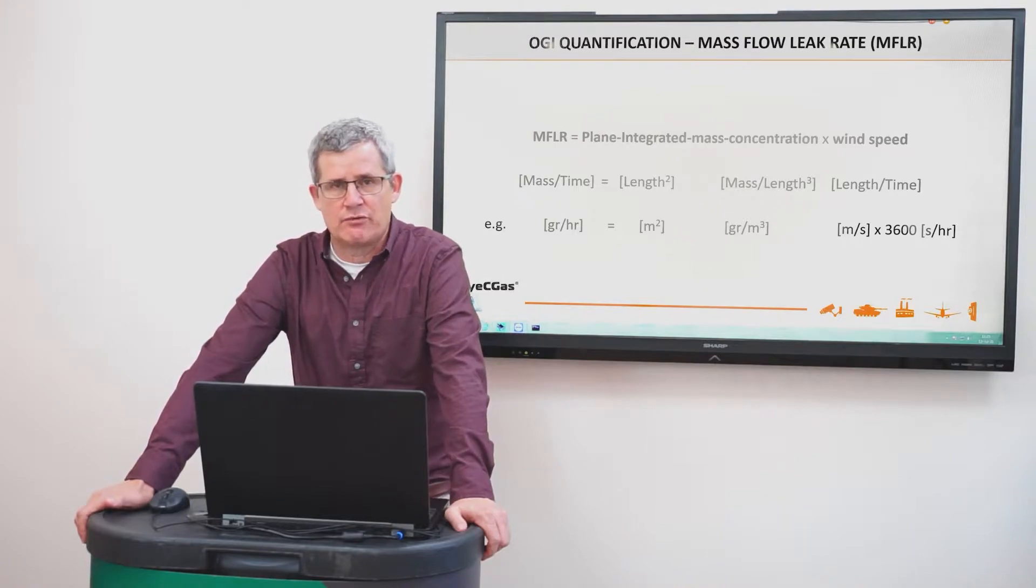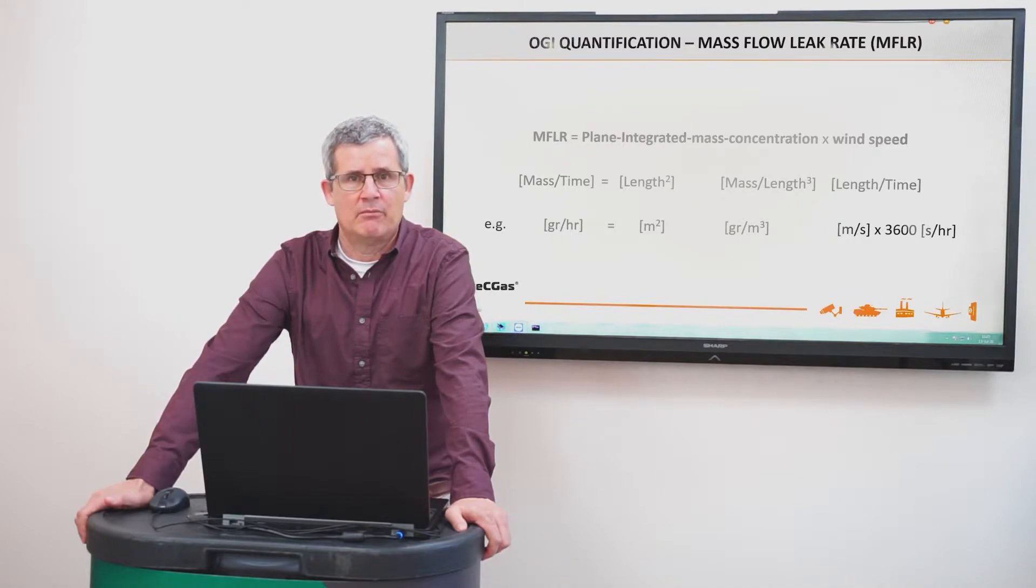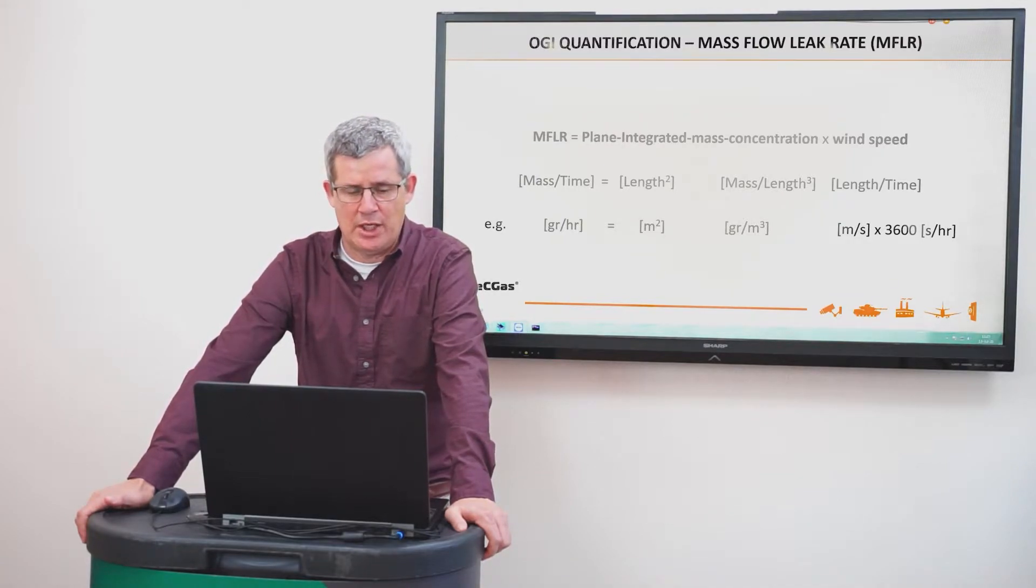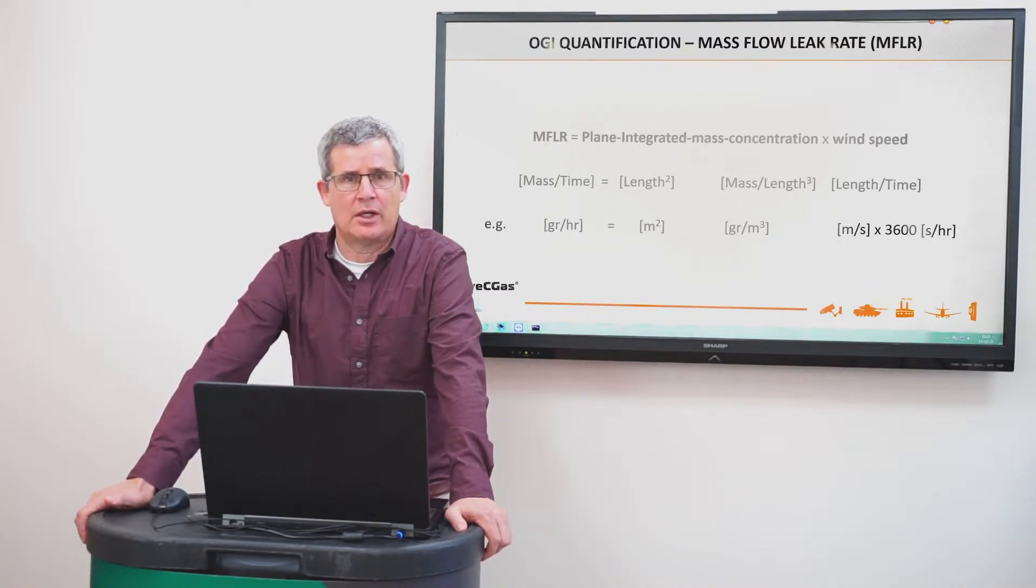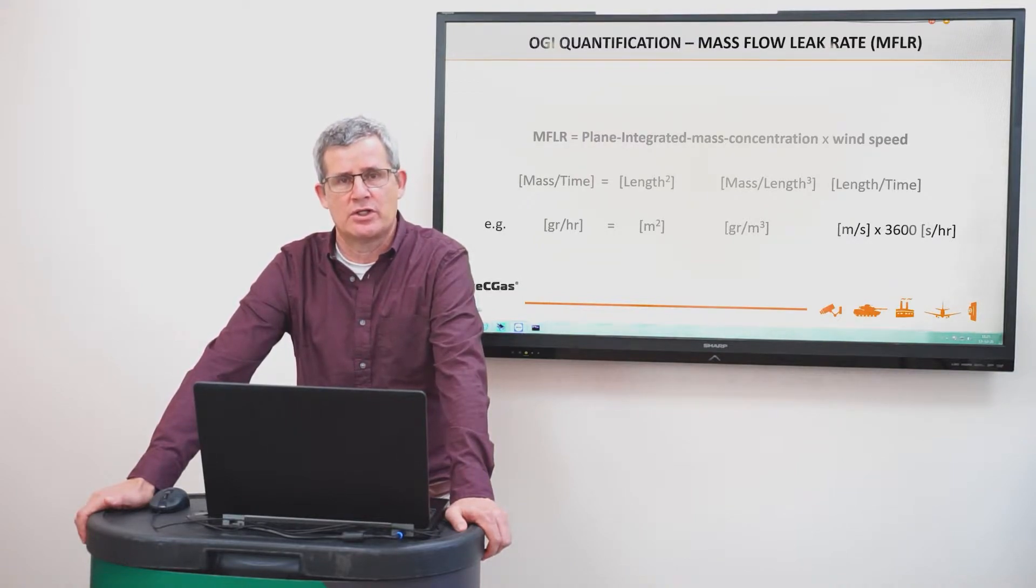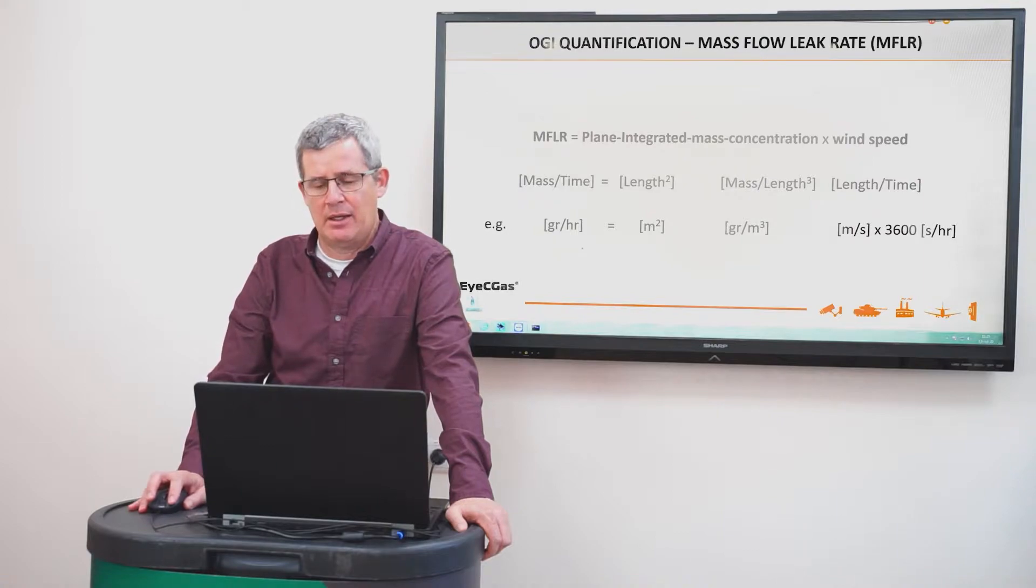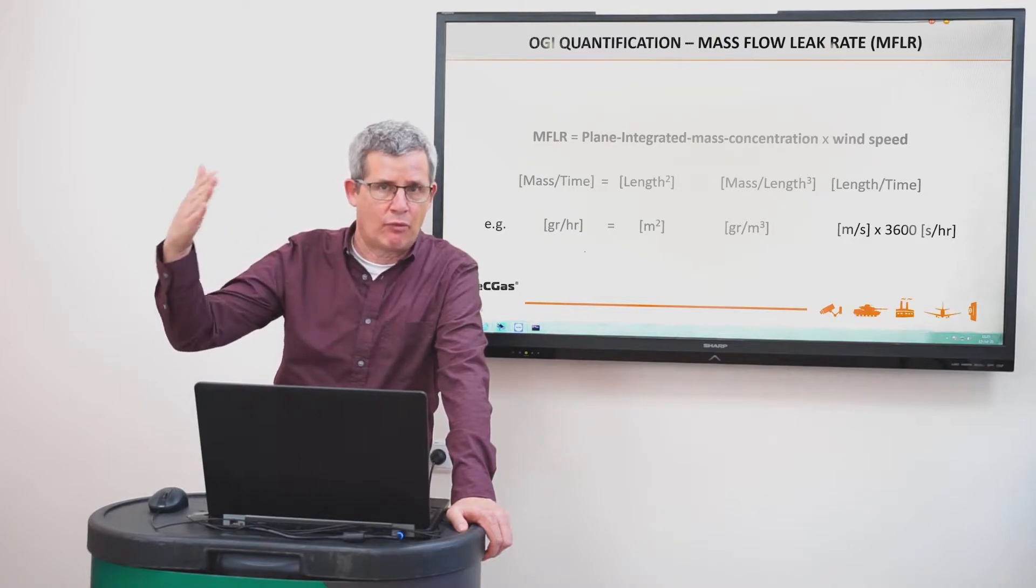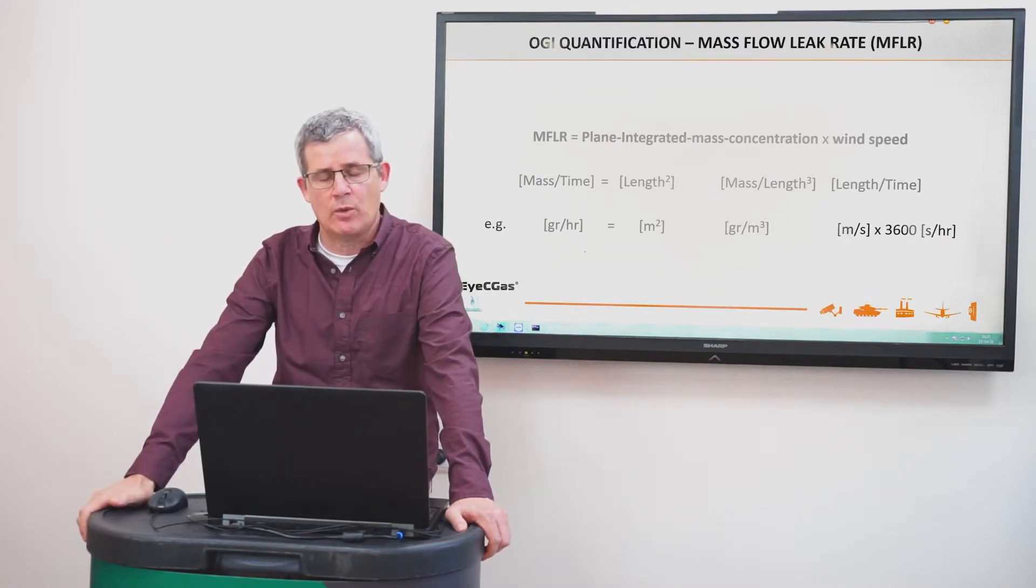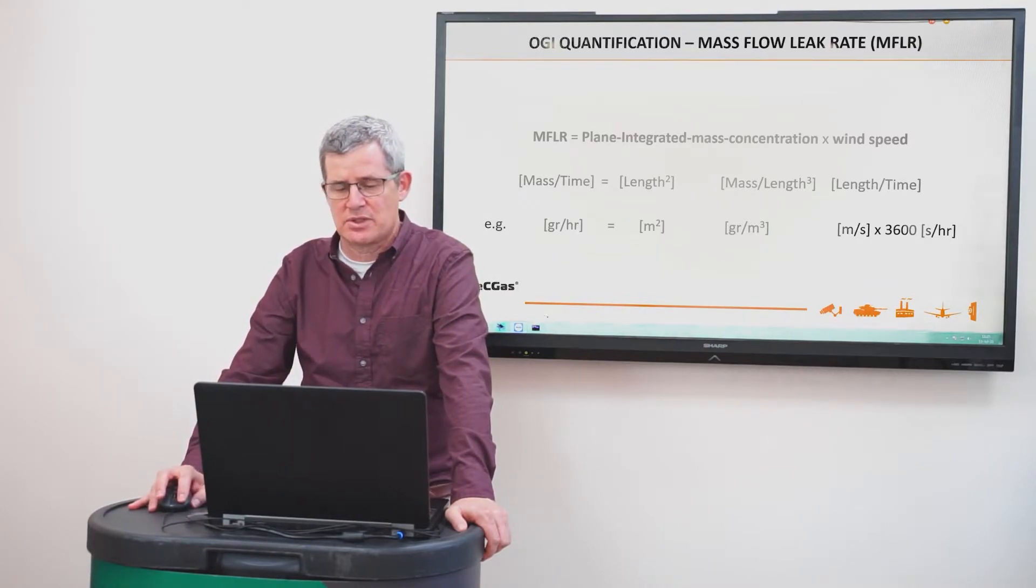The mass flow leak rate or the emission rate or fluxes are all the same for quantification with OGI. So basically when we talk about the leak rate we are talking about a mass that goes through a concentration, integrated concentration that goes through a plane, not through a plume, through a plane. And in order to know the rate that it goes through the plane we need to know what is the wind speed. So it's essentially the product of plane integrated mass concentration times the wind speed.